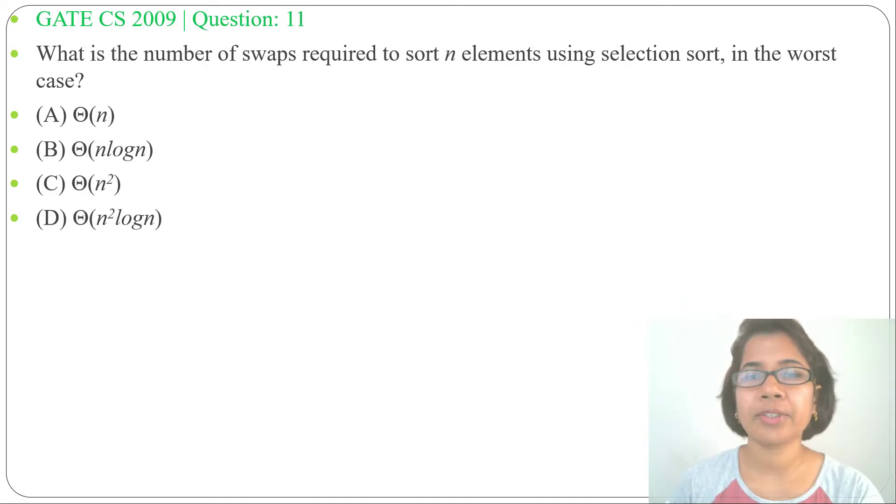Hi, let's solve one previous question of brute force approach. This question was asked in GATE CS 2009, question number 11. What is the number of swaps required to sort n elements using selection sort in the worst case?